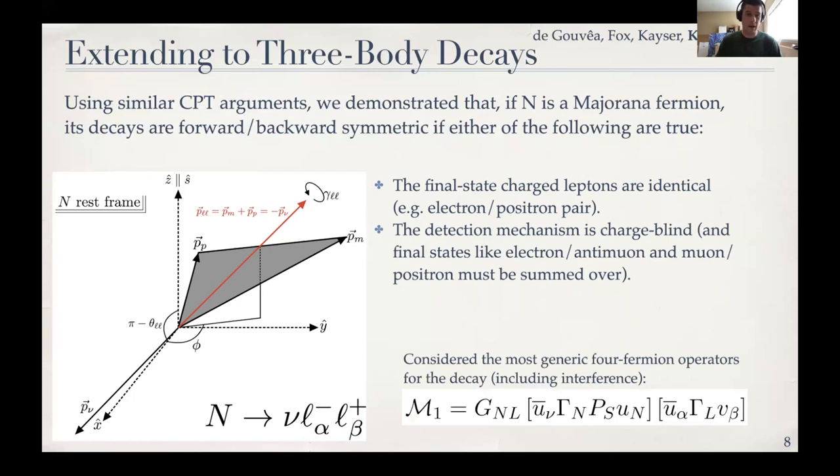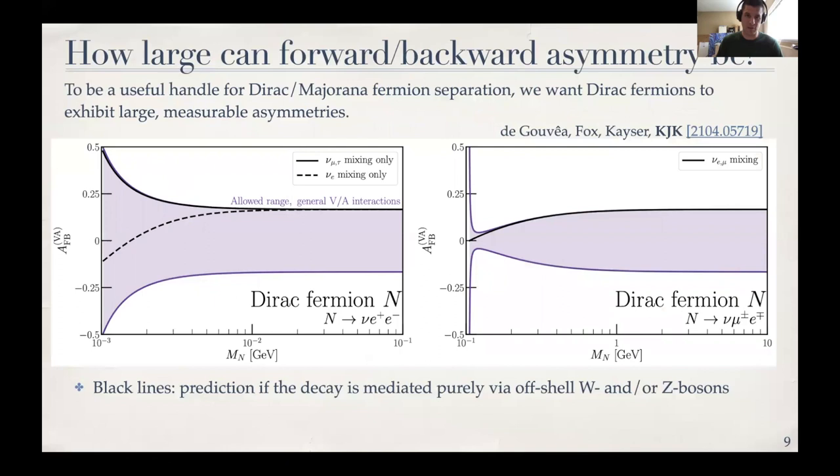So if N is a Majorana fermion, these decays tend to be forward-backward symmetric. However, if N is a Dirac fermion, that's not the case. And we determined the range of how large that forward-backward asymmetry can be depending on these new four fermion operators. For instance, if we restrict ourselves to having only vector and axial vector interactions, the allowed range is shown by these purple regions. The left panel is for the decays of N goes to a neutrino and a pair of charged electrons. And the right panel is going to a muon-electron pair. Like I said, the purple region is the full region allowed by generic vector-axial vector interactions. But if you restrict yourself to N decaying via off-shell W and or Z bosons, the calculation gives you the answers shown in black lines, which tend to be large forward-backward asymmetries relative to the zero for Majorana fermions.